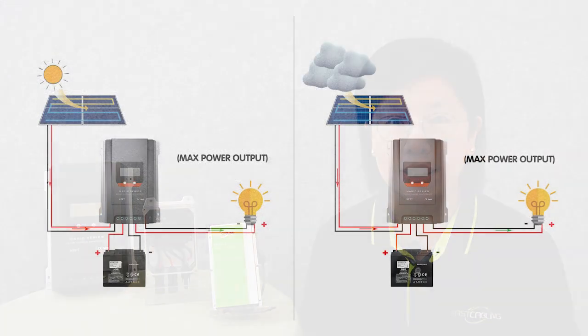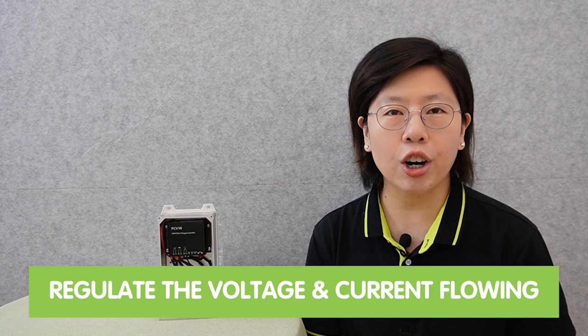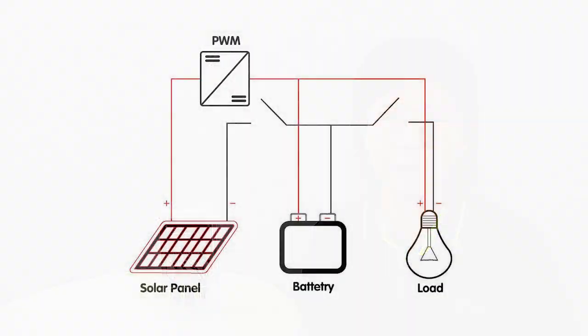They constantly adjust the electrical operating point of the modules to ensure maximum power output regardless of environmental conditions. The PWM solar charge controller is designed to regulate the voltage and current flowing from the solar panel to the batteries and other loads. They work by maintaining a constant voltage in the batteries, adjusting the charging current based on the state of charge of the battery.